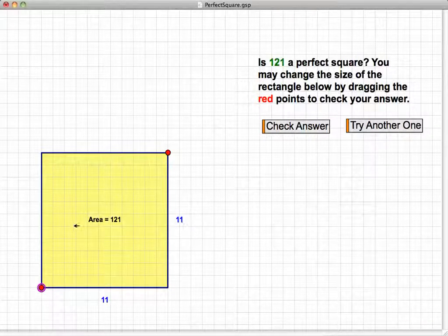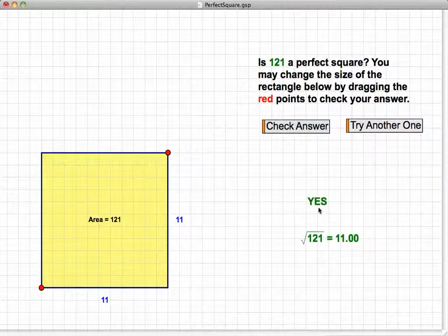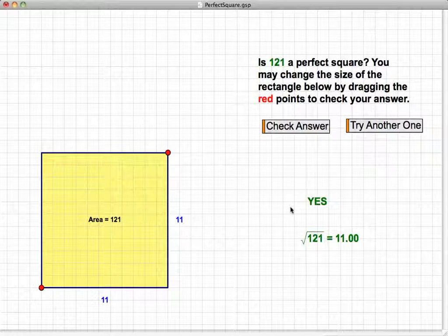And if they decide they've created a square to that area of 121, they can check their answer, and it will confirm that, yes, in fact, that is a perfect square.